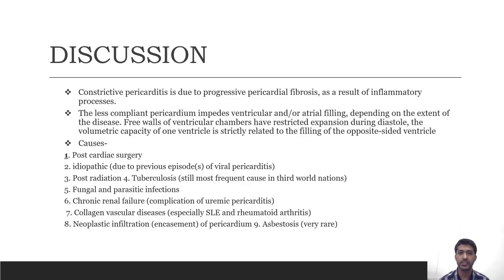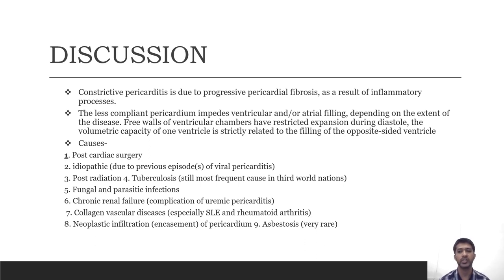Constrictive pericarditis is due to pericardial fibrosis resulting from an inflammatory process affecting the ventricles and atria. Depending on the extent of disease, the free wall of the ventricular chambers has restricted expansion during diastole. The capacity of one ventricle is strictly related to the filling of the opposite ventricle.